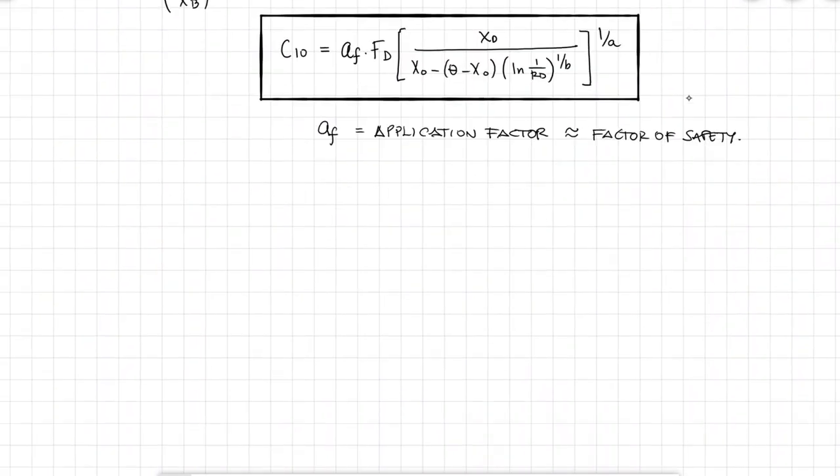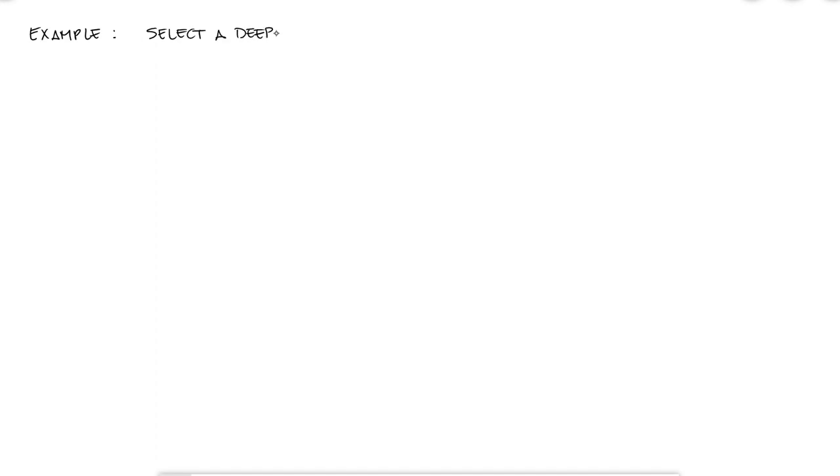Let's look at a deep groove bearing selection problem where the manufacturer rates its bearings for 10^6 revolutions and reports Weibull parameters of 0.02 for x0, theta minus x0 equal to 4.439 and 1.483 for b.